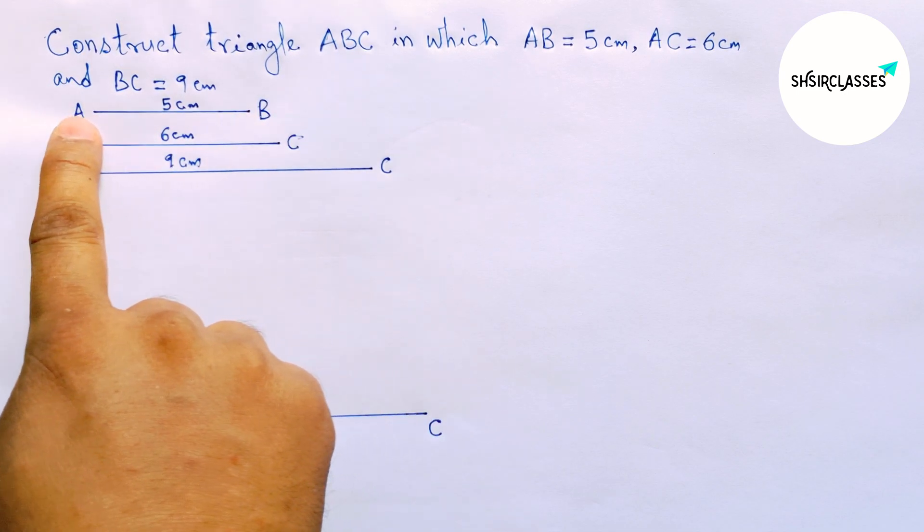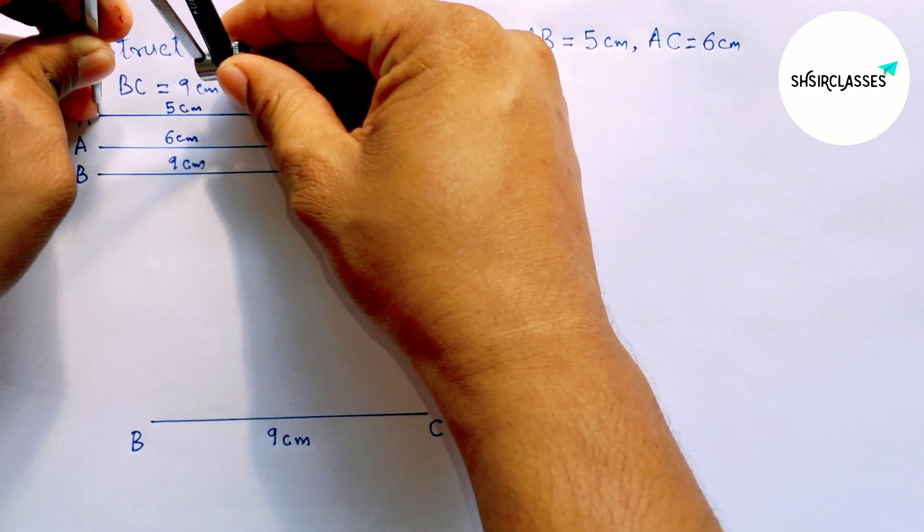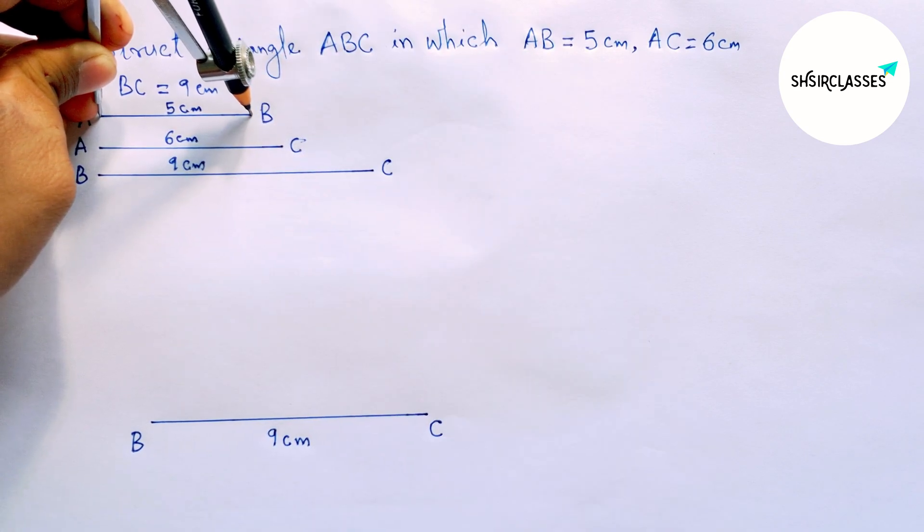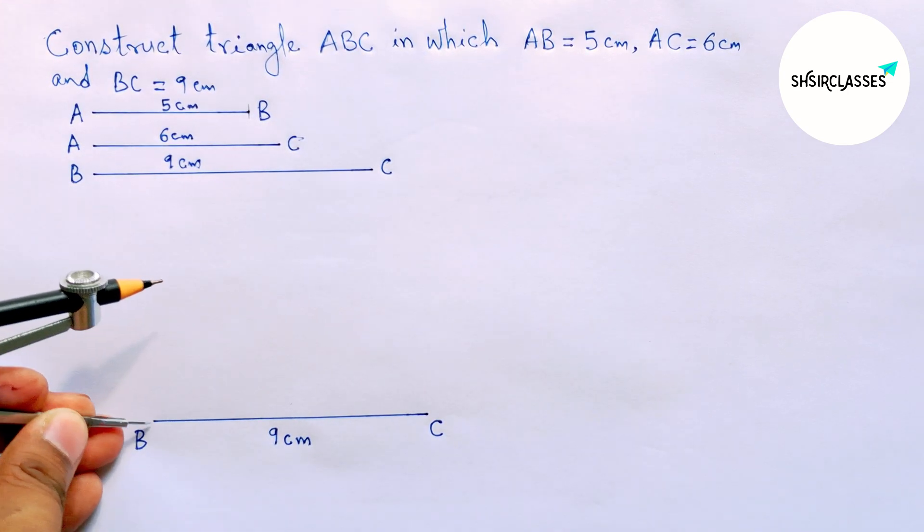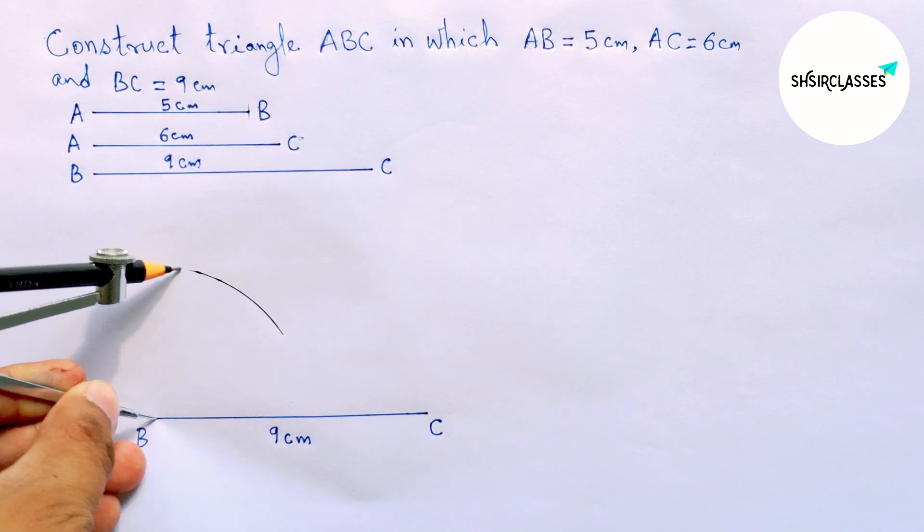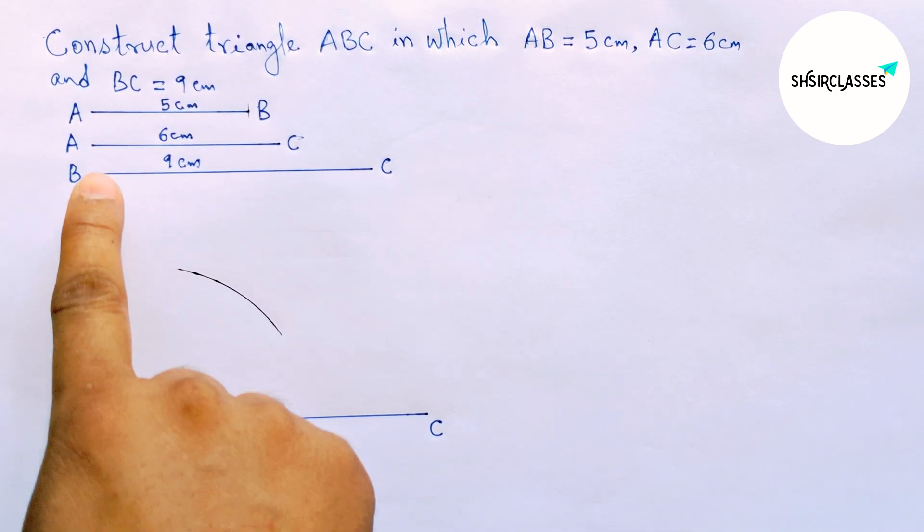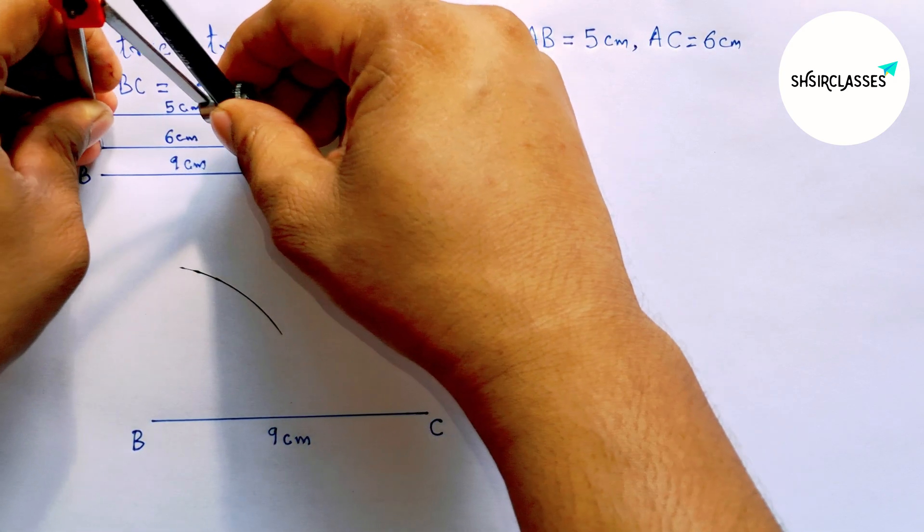So putting the compass on the point here A and measure AB equal five centimeter by this way. So this is perfect. Now putting the compass on the point B and drawing here an arc by this way. Next taking the length AC equal six centimeter with the help of compass.